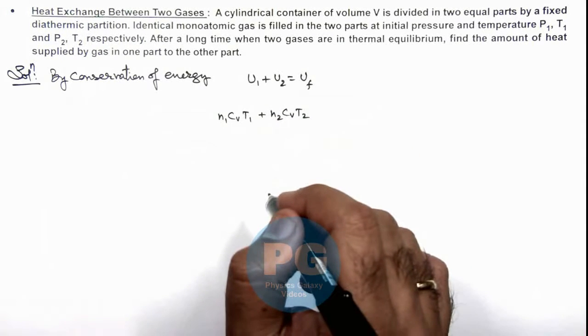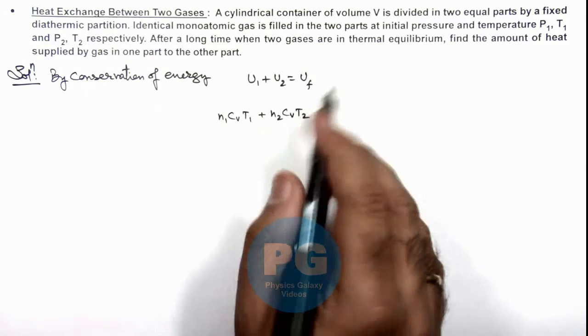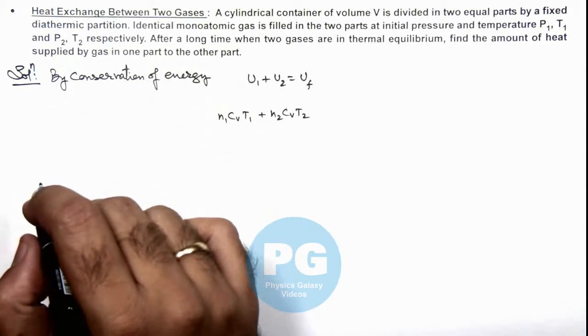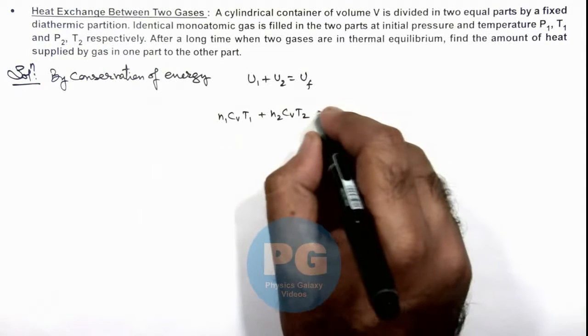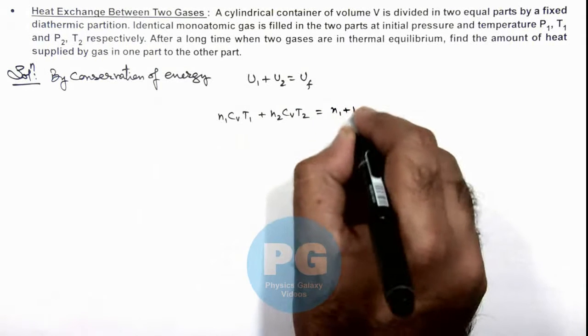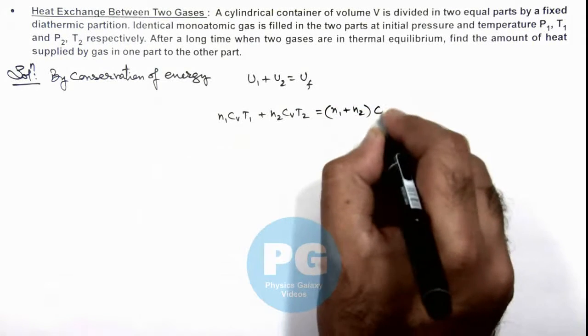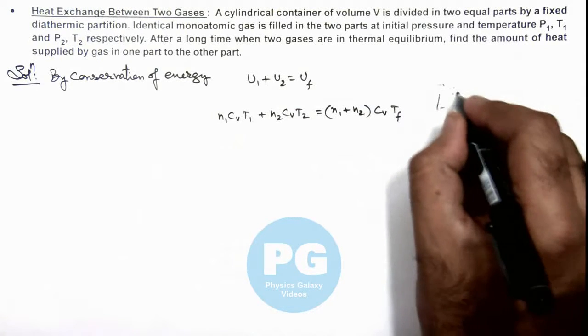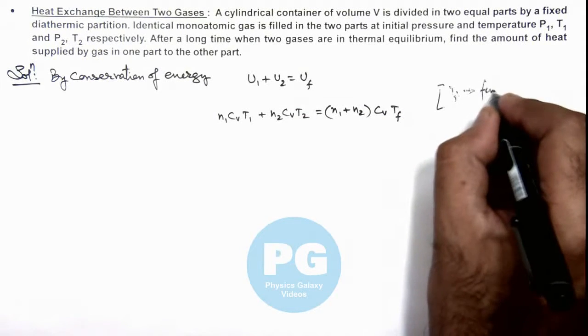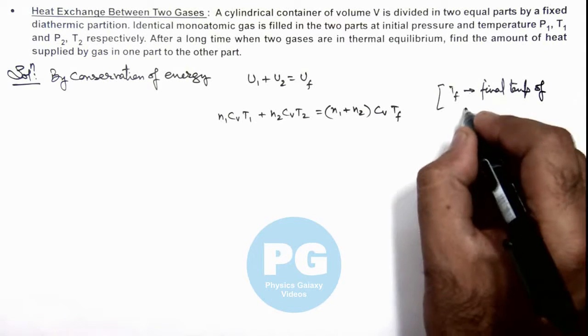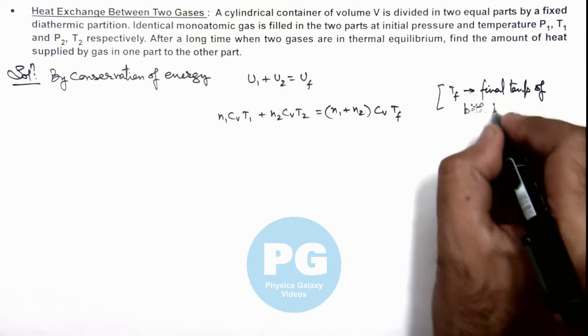If final temperature of the mixture of gases, or the two gases when the heat is mixed between the two due to diathermic partition, becomes T_f, then the final internal energy can be written as (n₁ + n₂)CᵥT_f. Here we are assuming T_f is the final temperature of both the gases.